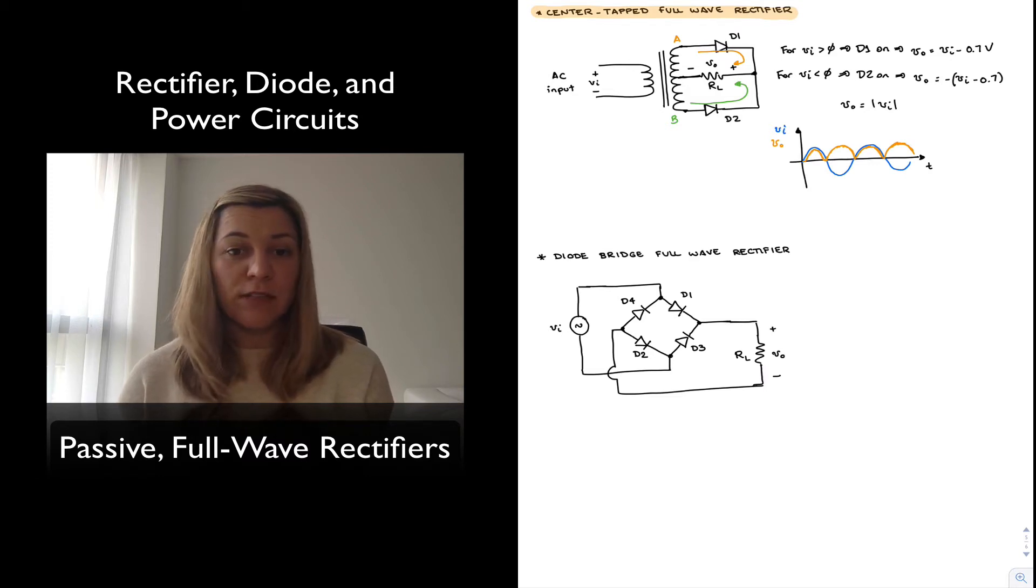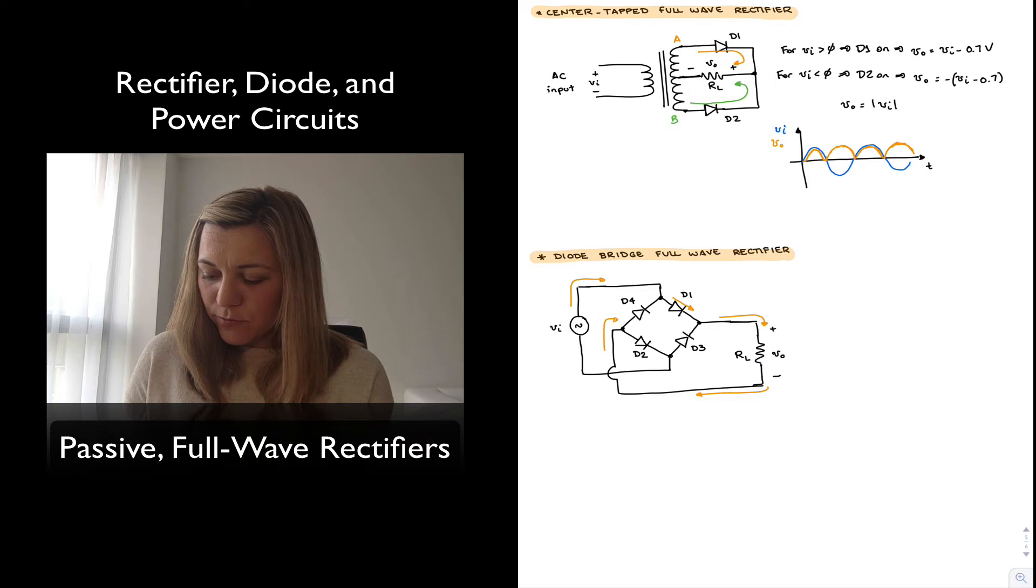Another version of a full wave rectifier is the diode bridge full wave rectifier. In this case, during the positive half cycle, we will see that current is flowing into the diode bridge. D1 is going to turn on or become forward biased. Since we find the cathode of D3, D3 is going to be reverse biased, so the current is going to flow through resistor RL and then come back to the diode bridge and flow through D2 and back.